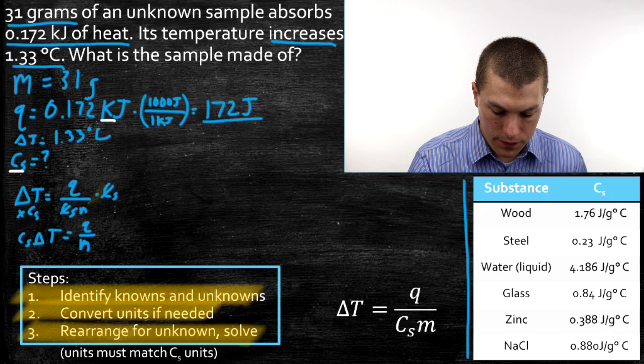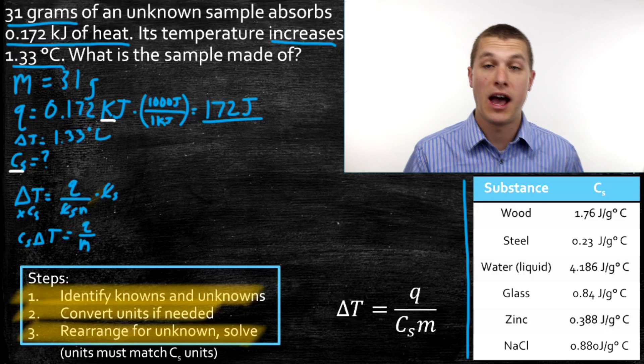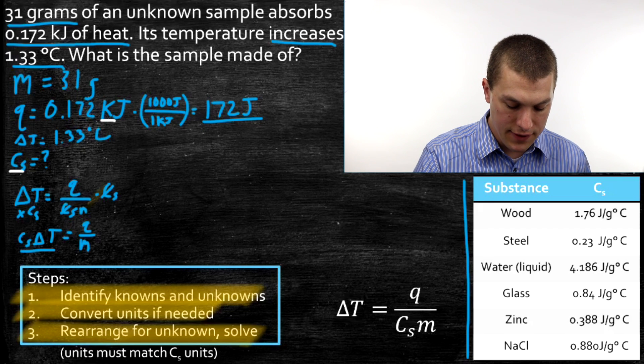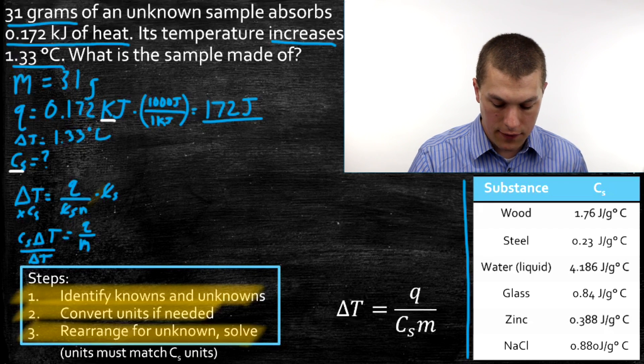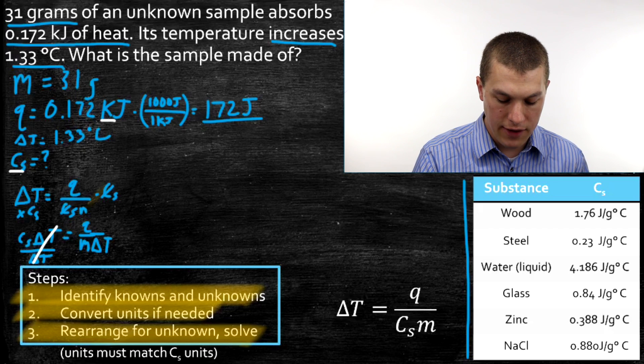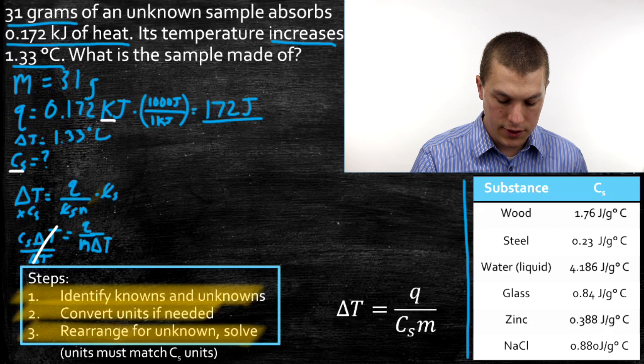And then what we want to do is we want to go ahead and divide both sides by delta T. Because delta T is with Cs, and we want to get Cs by itself. So I divide this side by delta T and this side by delta T. And that delta T cancels out, and we're left with Cs is equal to Q over m delta T.